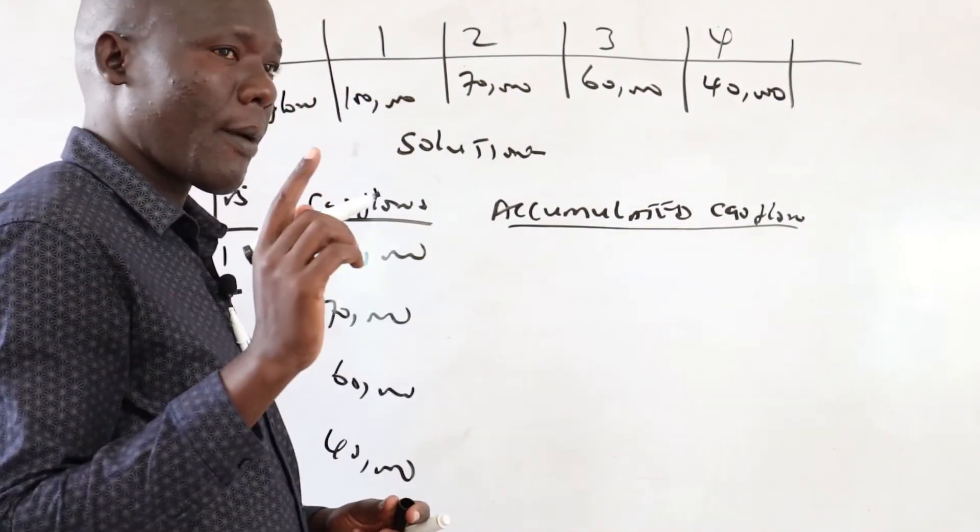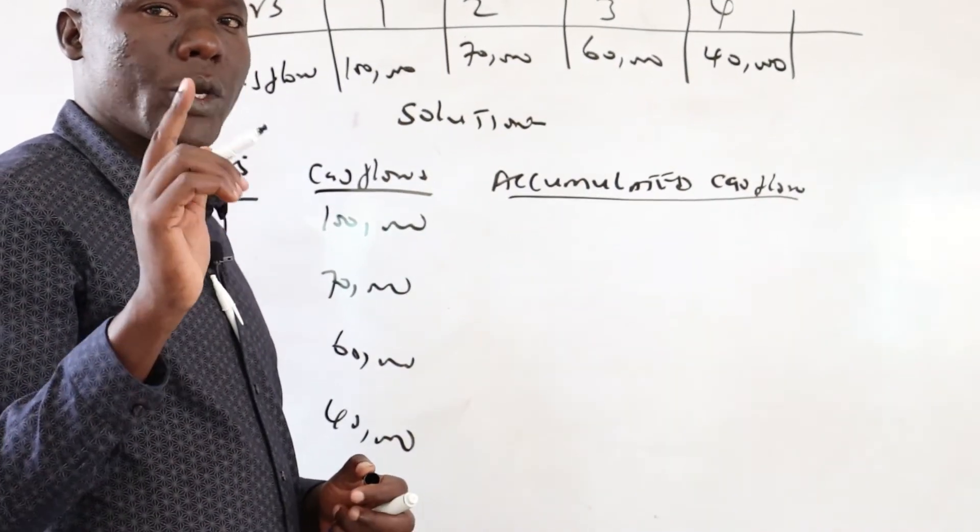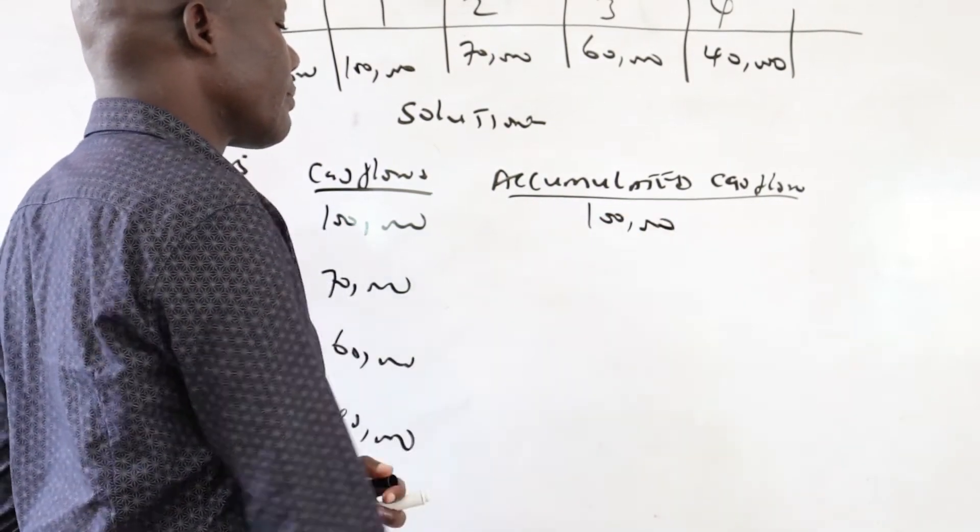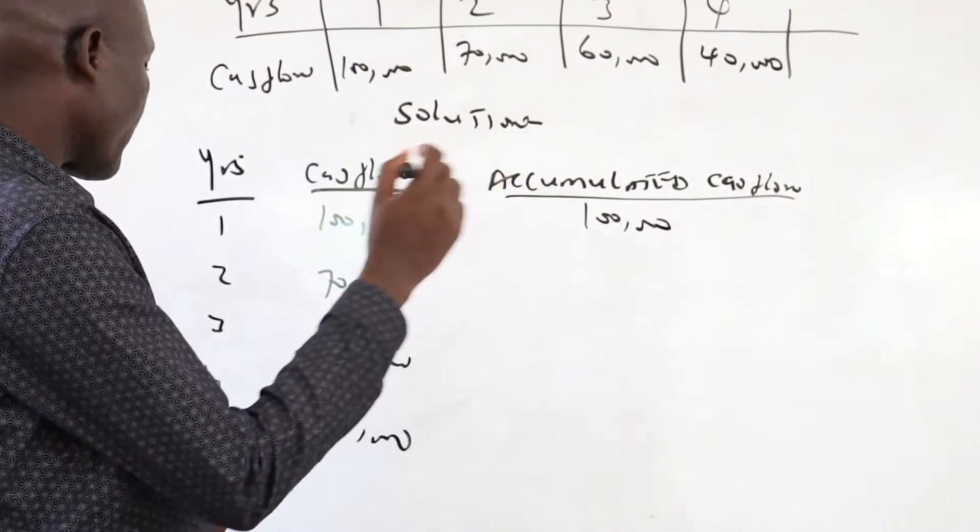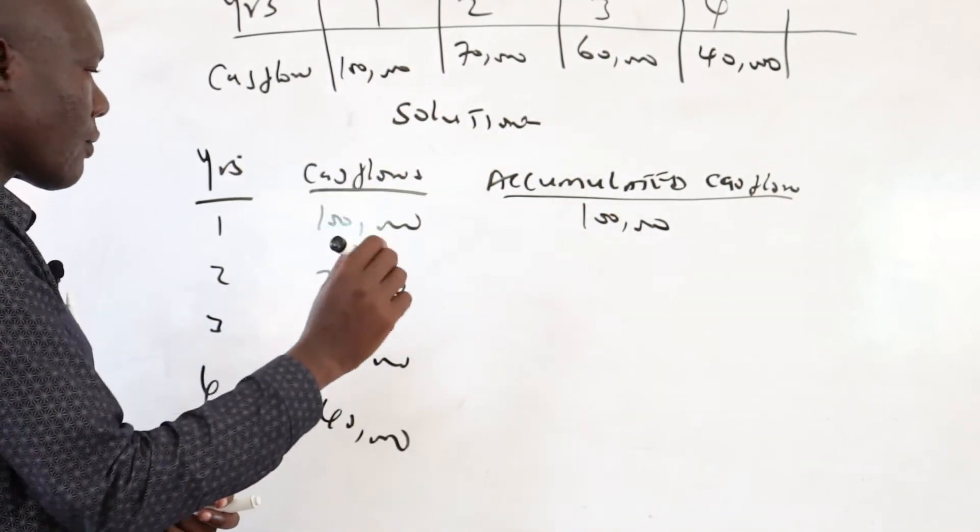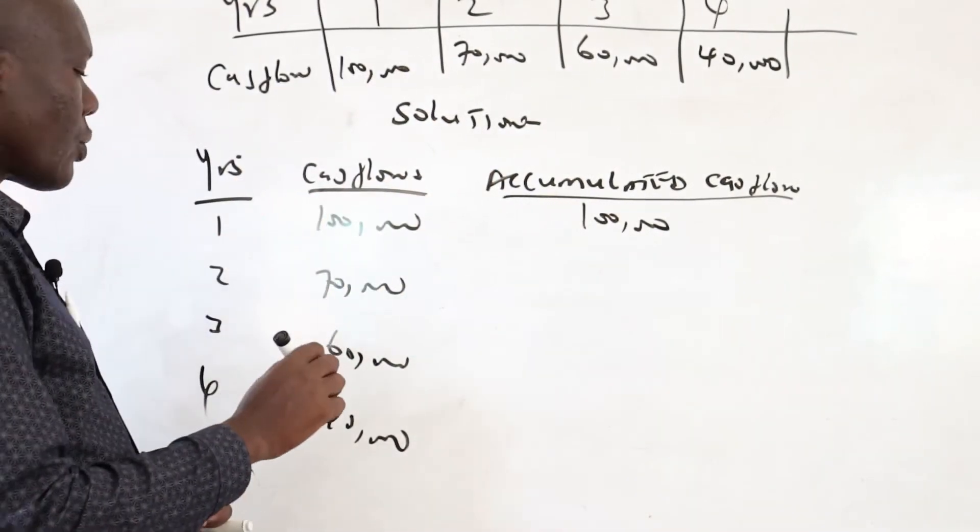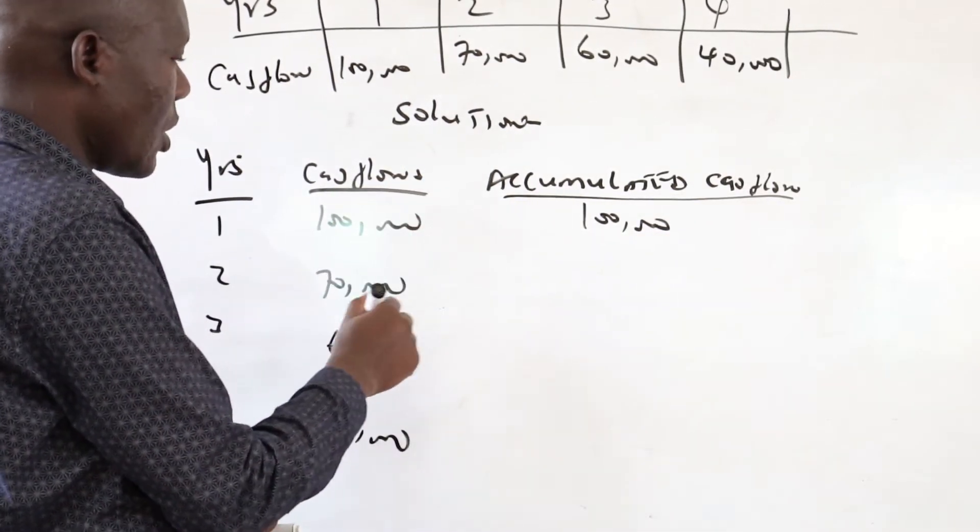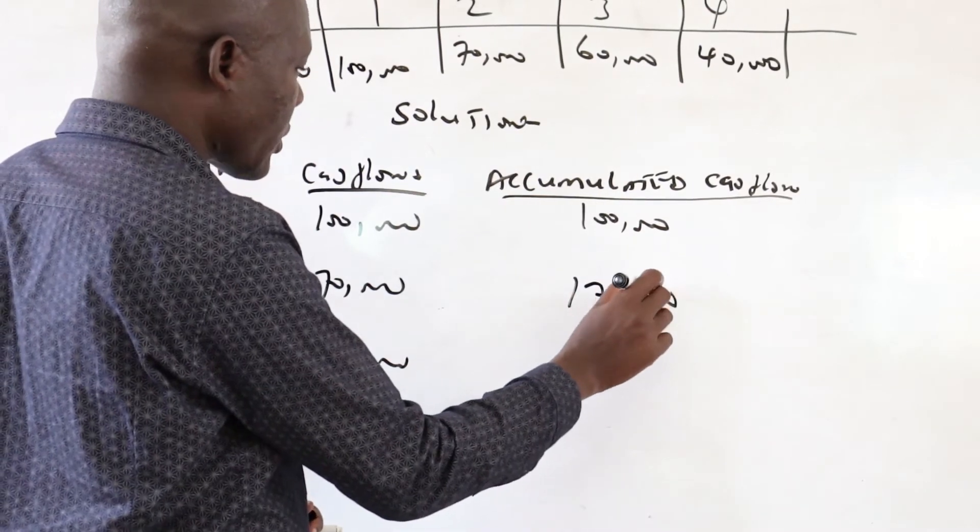The first amount for the first period, we just write the way it is. So this is 100,000. When we go to period two, we will take the accumulated cash flow for period one and add it with the cash flow of period two. That is 100 plus 70 will give you 170,000.